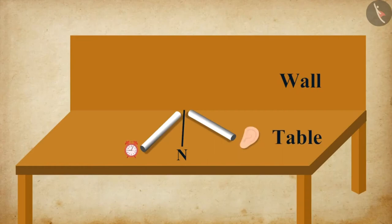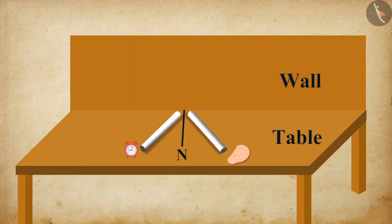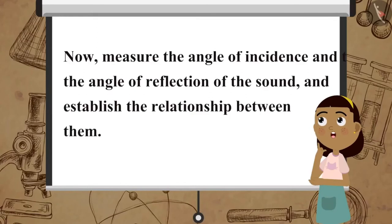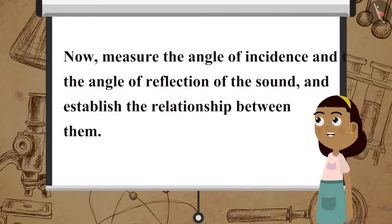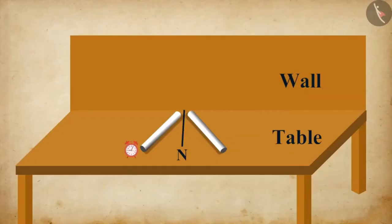To hear a clear sound of the ticking clock, adjust the position of the pipes as required. Now measure the angle of incidence and the angle of reflection of the sound and establish the relationship between them. Change the position of the pipe on the right by lifting it vertically and observe what happens.